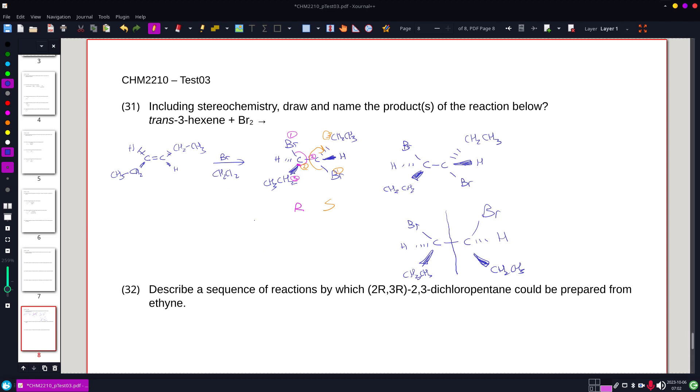So seeing that, or figuring out the rotation, either one, we're gonna be able to come up with a name of 3R4S, or 3S4R, 3,4-dibromo-hexane. And that is the only product.